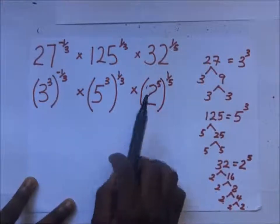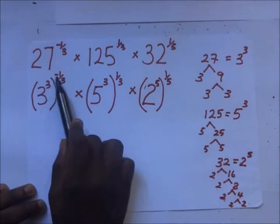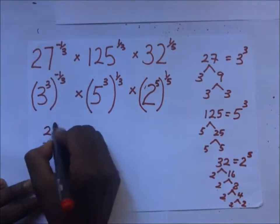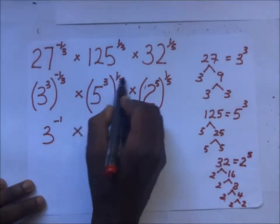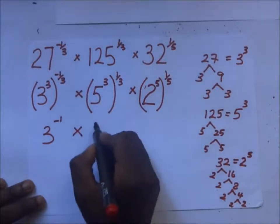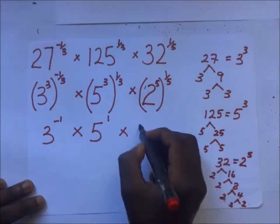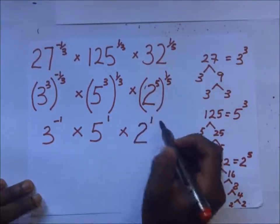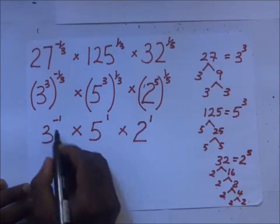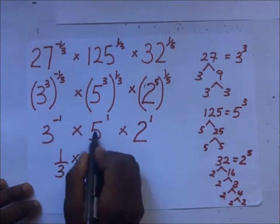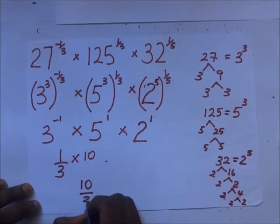After simplifying through factorization it becomes easier. The power becomes 3 times negative a third, leaving 3 to the power negative 1. Multiplied by 3 times a third, which leaves 5 to the power 1. Then 5 times 1 over 5 gives 2 to the power 1. Since we have a negative 1, we take the reciprocal: that becomes 1 third, times 5, times 2, which is 10. So the answer is 10 over 3.